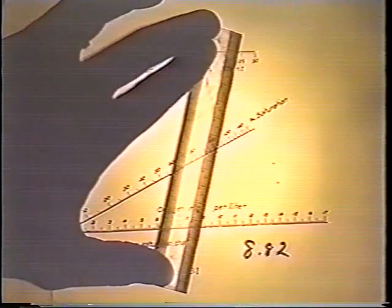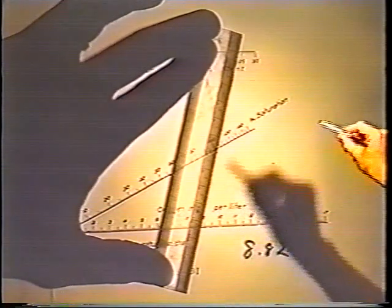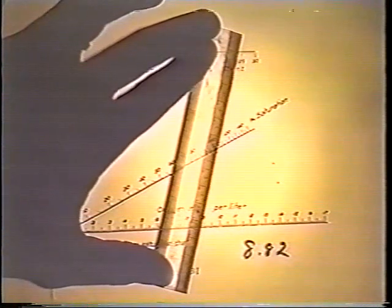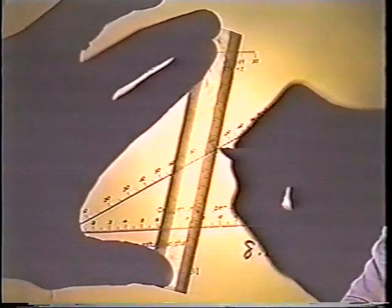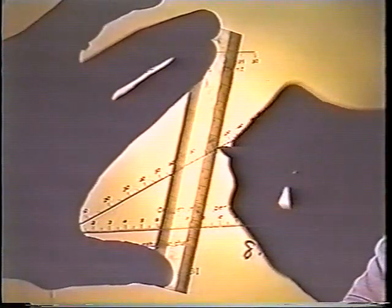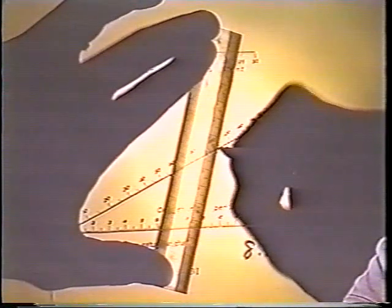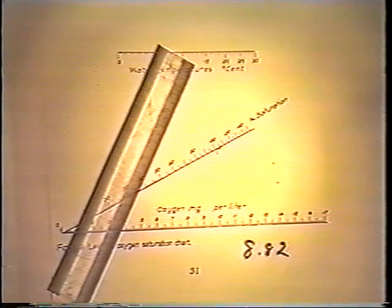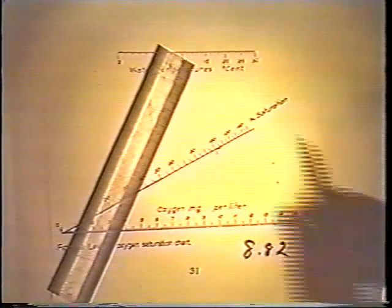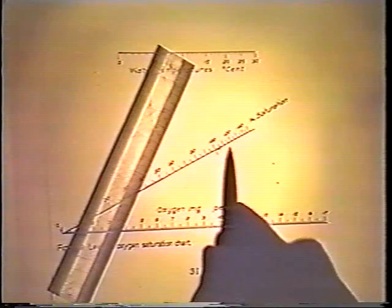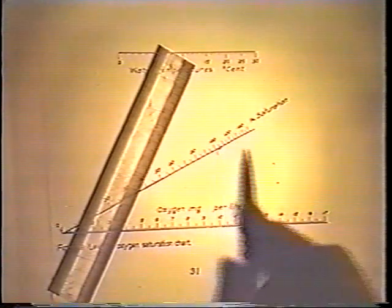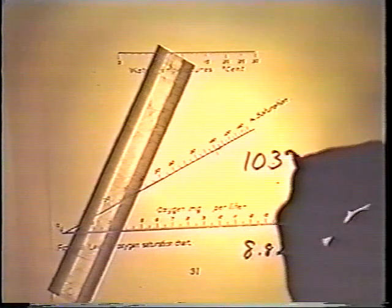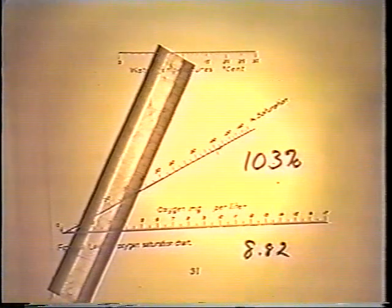The place on the middle line where these two points cross is my percent saturation. I'm going to find that to be about 103 percent saturation. Checking the scale, I'm going to say my percent saturation is 103 percent.